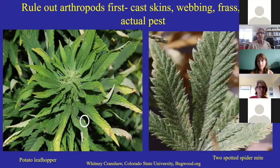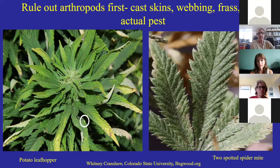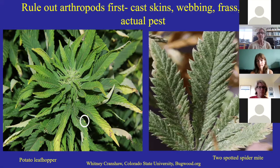When I'm diagnosing a hemp problem, the first thing I do is rule out arthropods. A lot of arthropod and insect problems can look like plant diseases. One of the main ones right now is potato leafhopper — this little guy doesn't overwinter in Vermont, but blows in on storm fronts in June and injects a toxin into the leaves, causing yellowing and dieback. When an arthropod is involved, you'll often be able to see cast skins, webbing if it's a spider mite, frass (insect poop), eggs, or the actual pest with a hand lens.